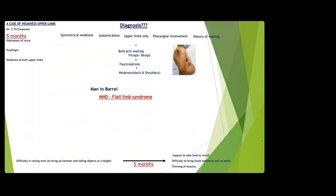The final diagnosis: motor neuron disease, flail limb syndrome — Brachial Amyotrophic Diplegia (man-in-barrel syndrome) can be suspected, presenting with both weakness and wasting, wasting more than weakness, without any sensory involvement. In motor neuron disease, the important spared features are: sensory system, extraocular movements, bladder and bowel. A combination of UMN and LMN signs may be seen.